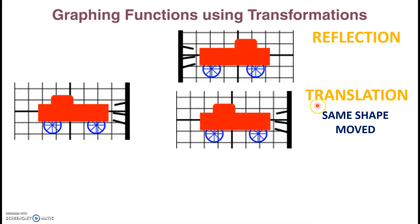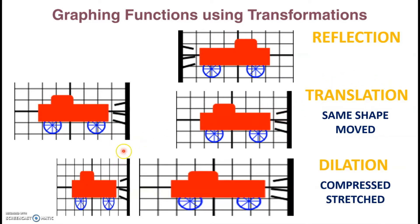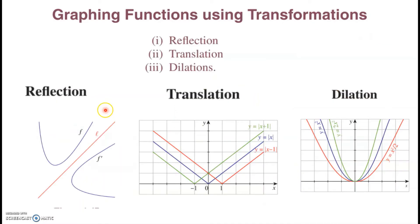Moving the object to a different location is called translation. The third transformation is dilation. In dilation, two things can happen: you can compress the object or you can stretch it. Graphically, let's see three examples of reflection, translation, and dilation.